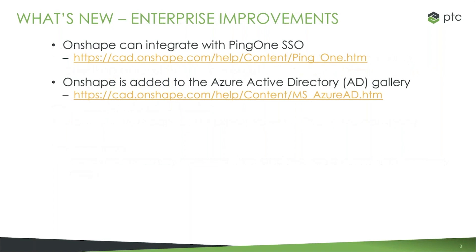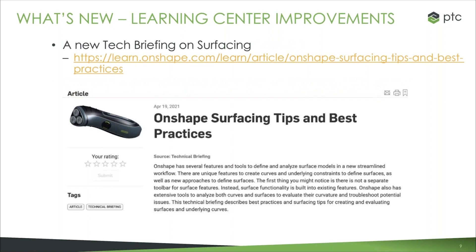For enterprise level subscriptions, there were some improvements to single sign-on. We've added Ping One — you can get some information on it in the help at cad.onshape.com/help. You can search for Ping One or type in that address. Additionally, we've improved our integration with Azure single sign-on — we've added Onshape to the Azure Active Directory gallery, which allows administrators to add Azure single sign-on a lot more easily to Onshape. The last improvement for the last couple releases is that we've released a new tech briefing on surfacing, specifically on tips and best practices — it gets into the different types of surfacing tools, curves, how to create them, and how to evaluate a surface for quality.